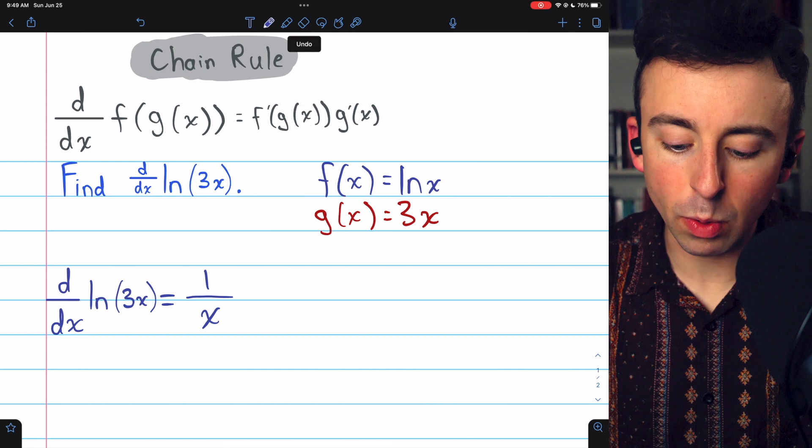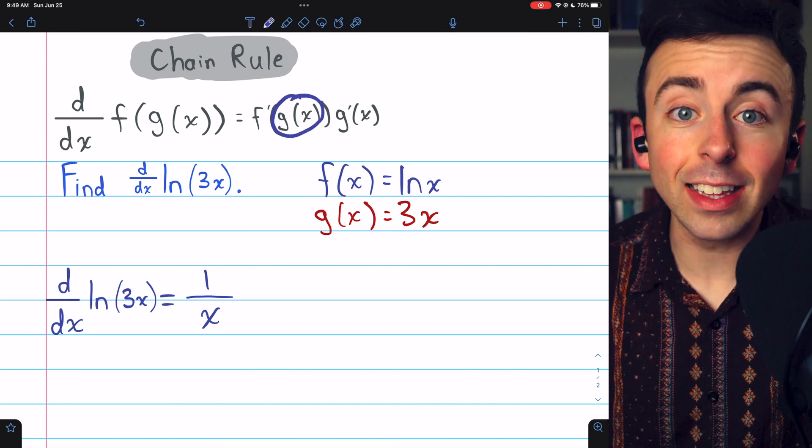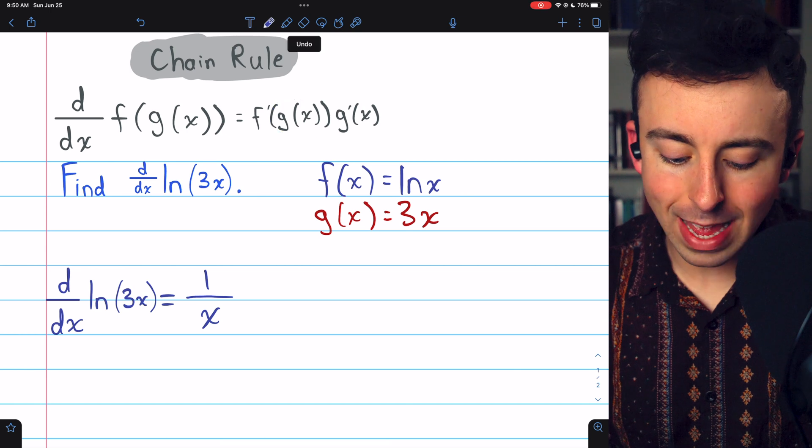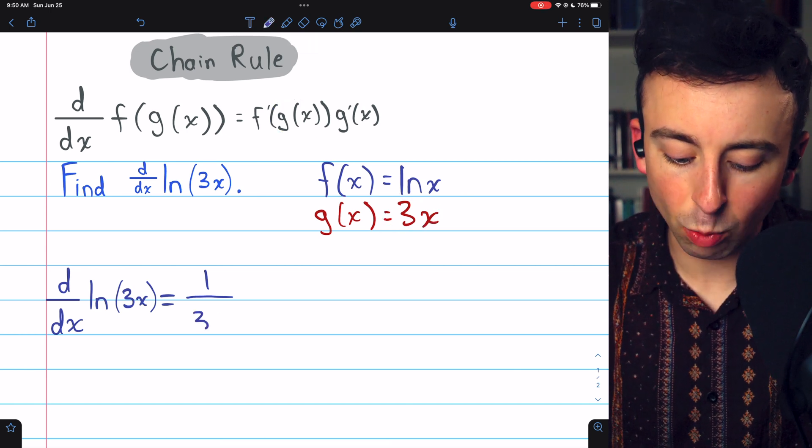However, it's not x that we want in the f prime, rather it's g of x, the inside function. So it shouldn't be x that's down here, it should be g of x, which is 3x.